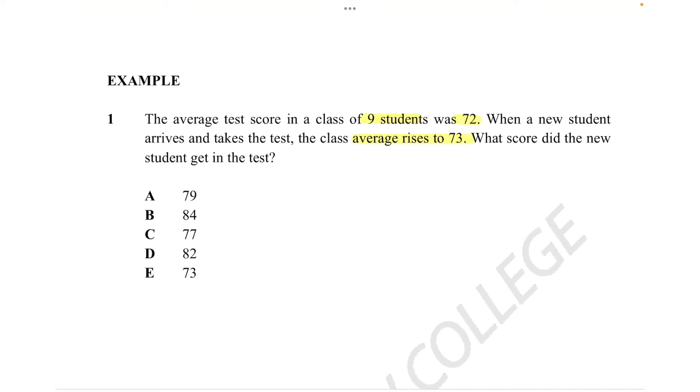And now, from that, we can find the total marks. And then we can do the same process with the average of 73 and 10 students. With that, we can minus the total of 9 students with a total of 10 students and single out the result for the new student. So let me draw this out so it might be a little bit more simpler to visualize.